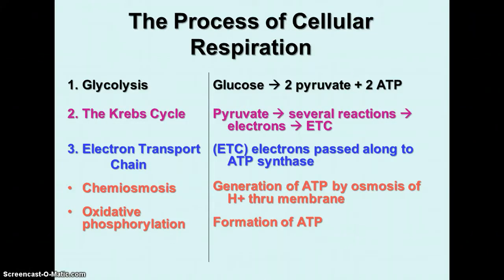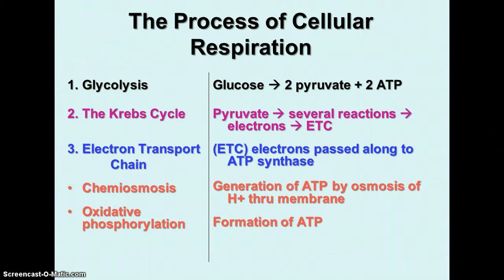The Krebs cycle, which occurs in the mitochondrion, takes those pyruvate molecules and through a cycle of reactions releases a little bit of ATP and some high-energy electrons that are carried along to the electron transport chain. The third phase, the electron transport chain — also called the ETC — takes these electrons, and they're passed along a chain of reactions to a molecule called ATP synthase that produces the bulk of the ATP from cellular respiration.